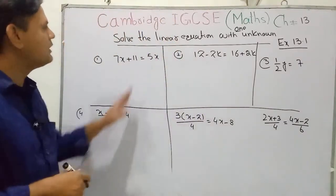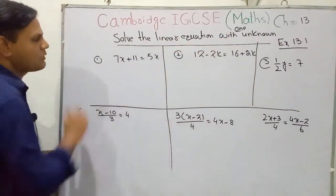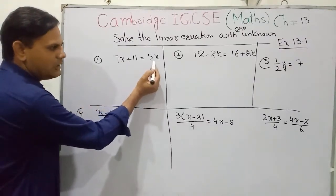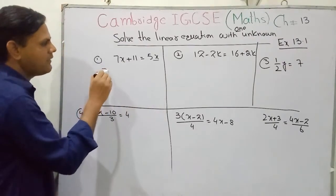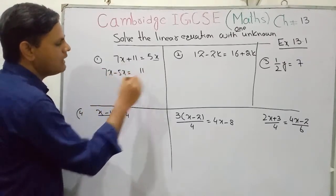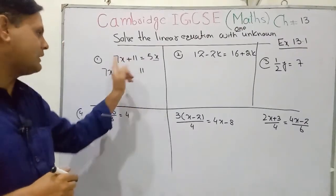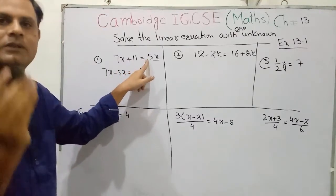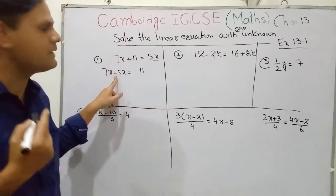So we solve the linear equation with one unknown value. How do we solve it? Take the first question. What you will do is take the variable terms to one side and the constant terms to the other side. When you move any number from one side of the equal sign to the other side, you change the sign. Here the sign is positive; when you move this number across, you use the negative sign.